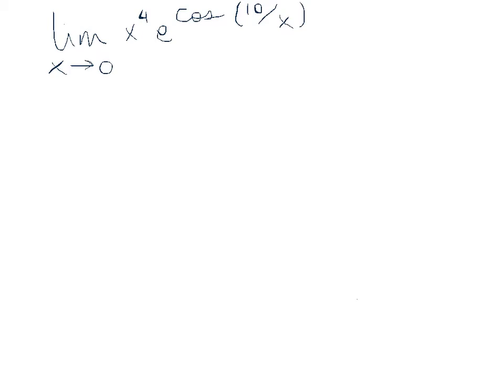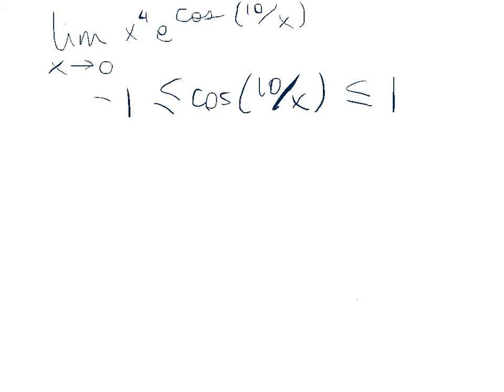I'm going to start with the cosine portion because I know an upper bound and a lower bound for it. So I know that the cosine of 10 over x, as long as x is not 0 — and here we're taking the limit as x goes to 0, so we're concerned with values near 0 but not at 0 — the cosine of 10 over x has to be less than or equal to 1 and greater than or equal to negative 1.